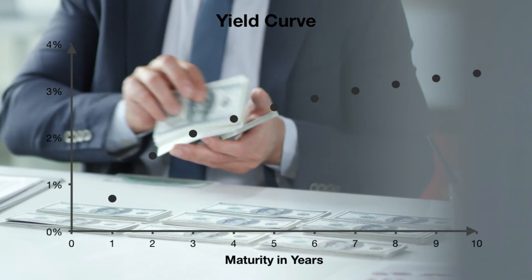In a normal yield curve, long-term bonds have higher yields than short-term ones. That's because investors expect to be compensated for locking up their money for a longer time. A normal curve slopes upward: short-term rates are lower, long-term rates are higher, and that usually signals a healthy, growing economy.